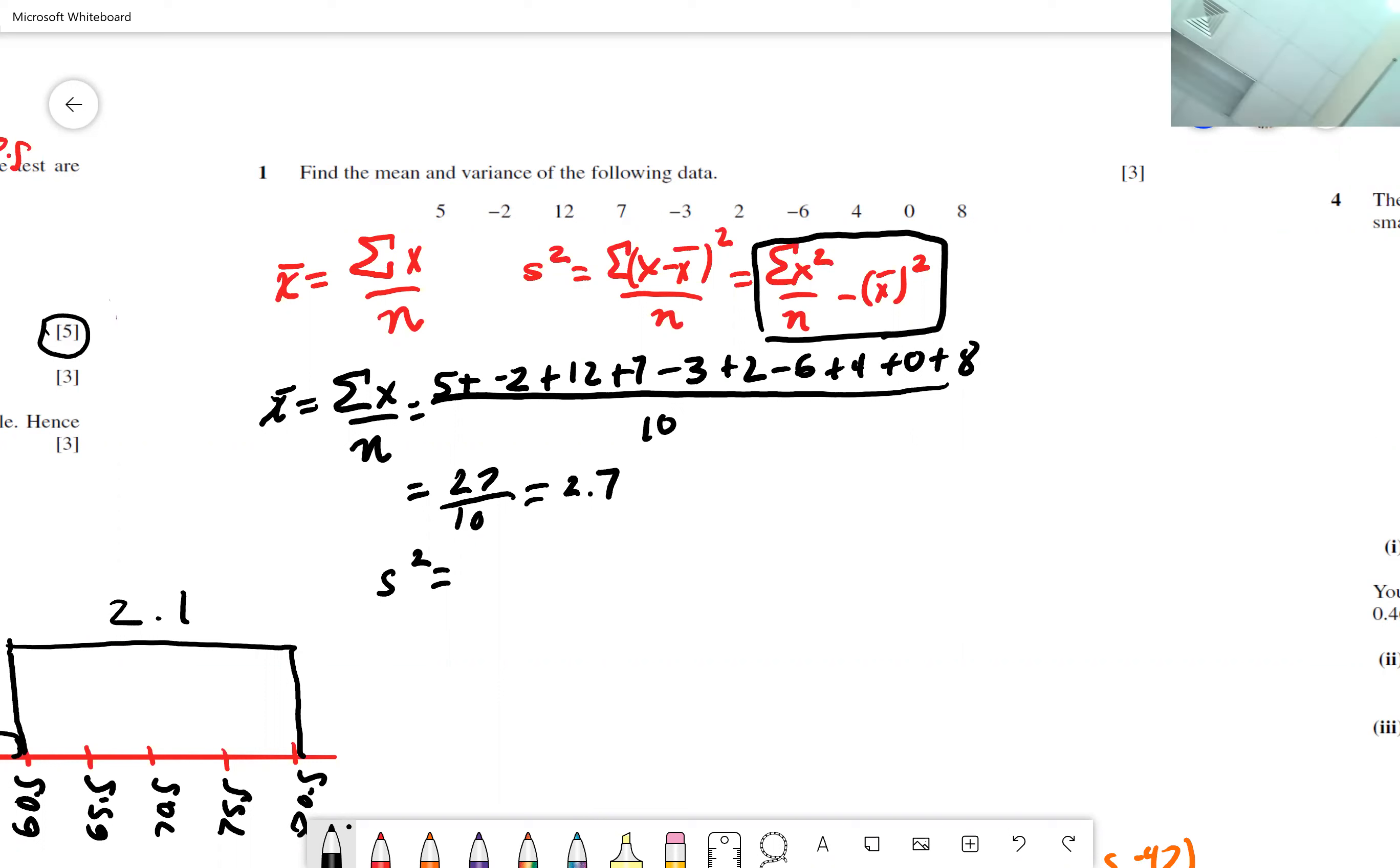That's how you do your mean. Now, if you want to do your variance, I would use the shortcut. This one here, you have to take 5 minus 2.7 squared plus negative 2 minus 2.7 squared plus 12 minus 2.7 squared and so on. This other one, I would just have to figure out sum of x squared. You would have 25, 4, 144, 49, 9, 4, 36, 16, 0, and 64. You would add up all those numbers and that would give you the sum of x squared.